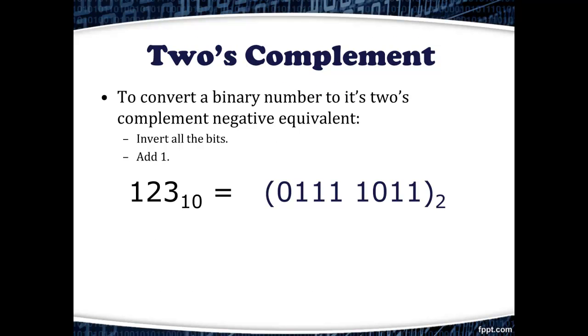Let's refresh our memory about two's complement notation. To convert a binary number to its two's complement negative equivalent, we perform two steps. First, we invert all the bits, and second, we add 1.